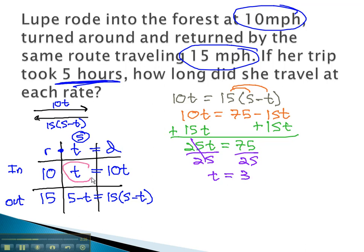We said t was the trip in, 3 hours. Coming out, then, is 5 minus t. 5 minus 3 is 2 hours.